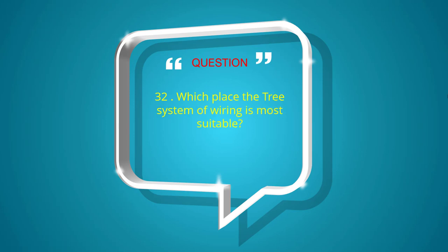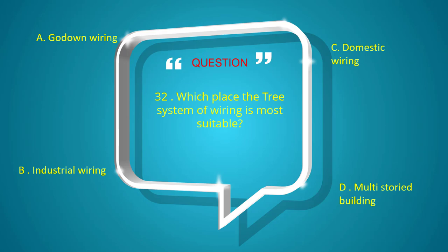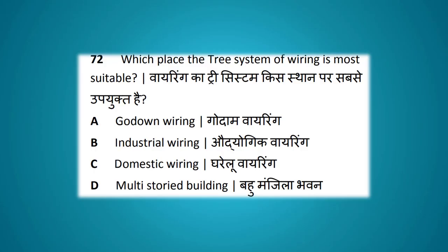Which place is the tree system of wiring most suitable? Options: godown wiring, industrial wiring, domestic wiring, multi-storied building. The answer is multi-storied building.